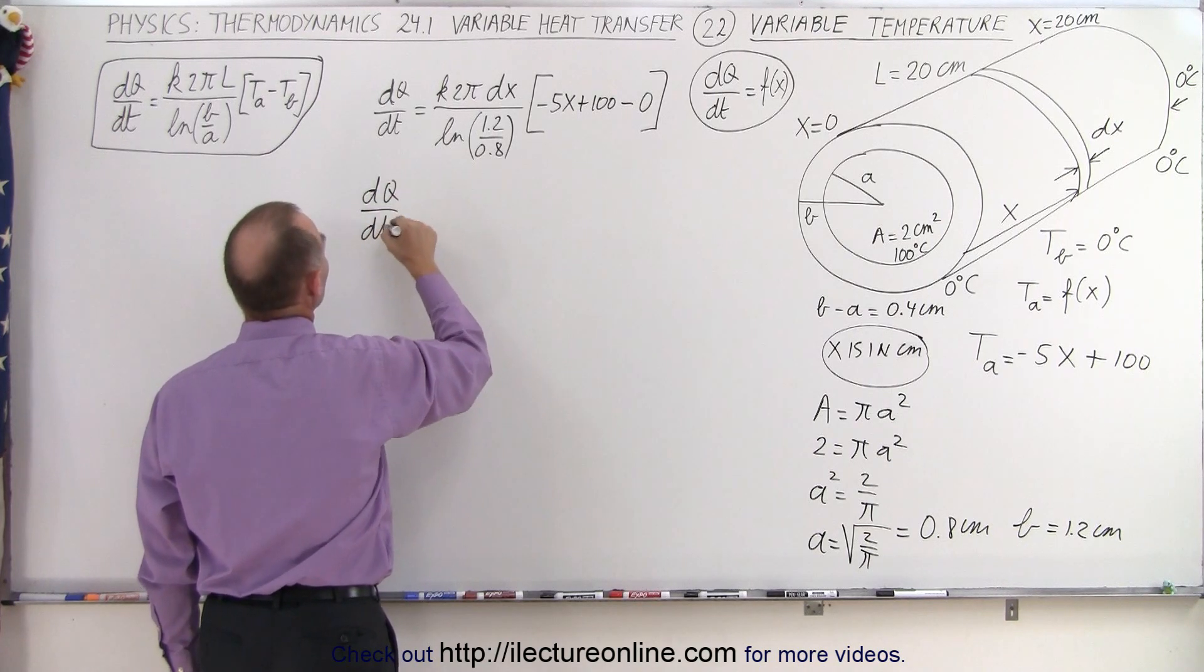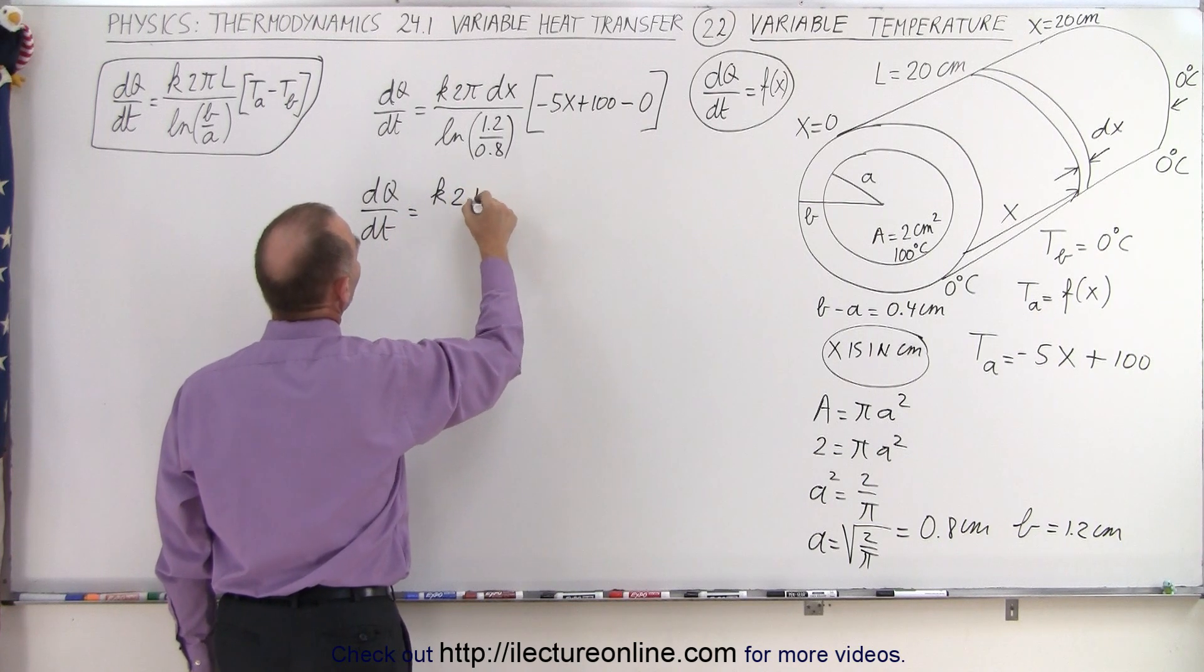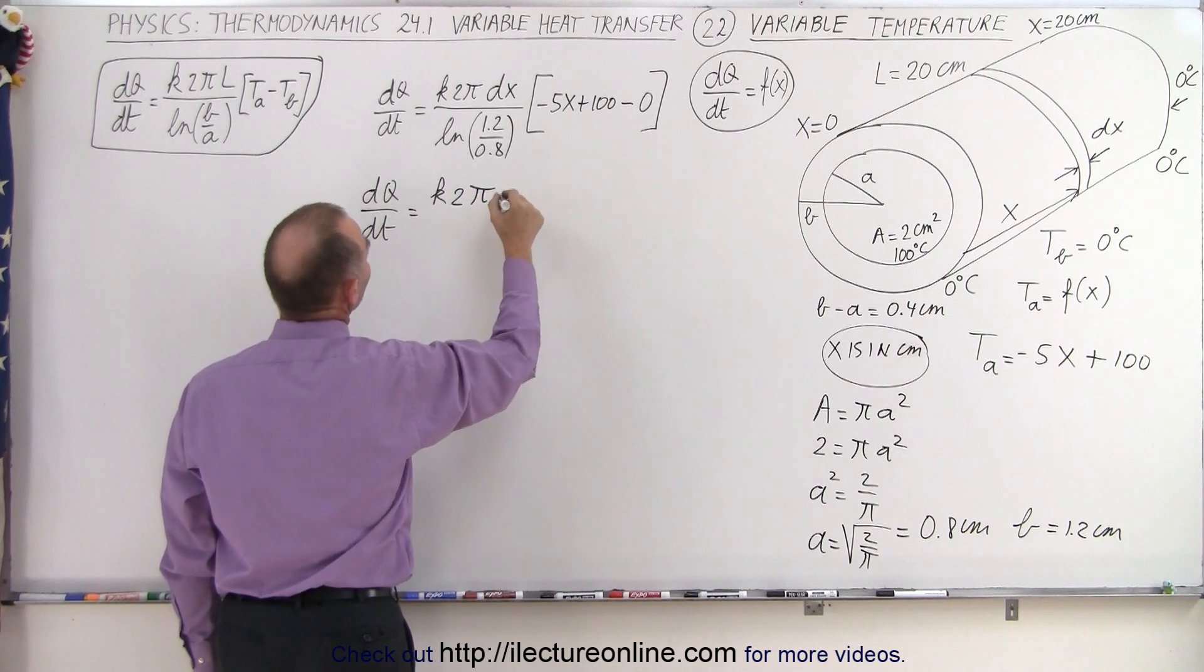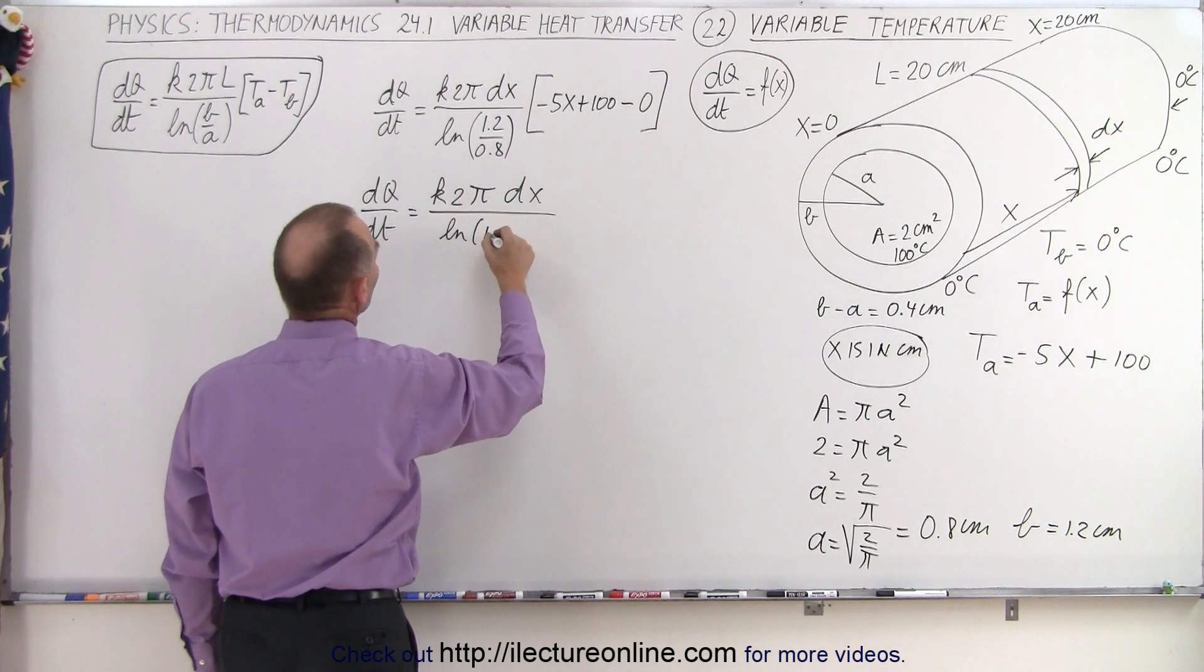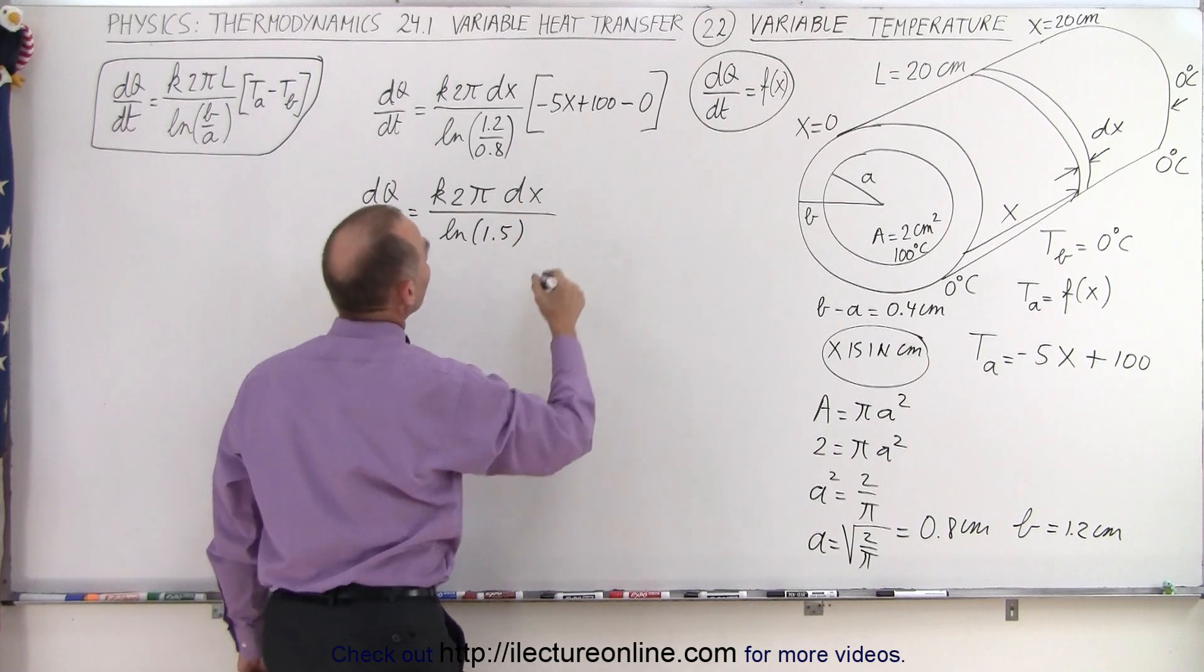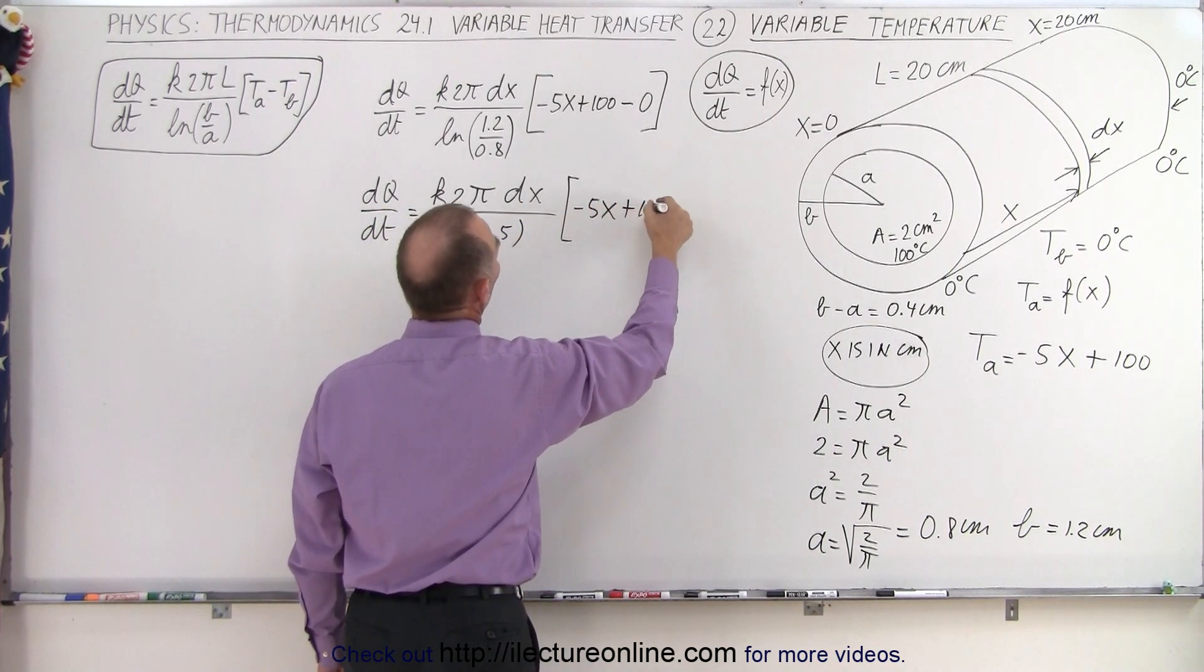So now we have the dq/dt, which is equal to K, that's a constant, 2 pi, those are constants, times dx, divided by the natural log of 1.2 divided by 0.8, which is the natural log of 1.5, times minus 5X plus 100.